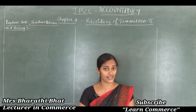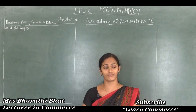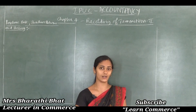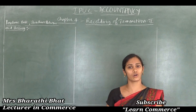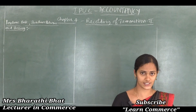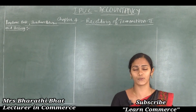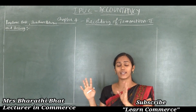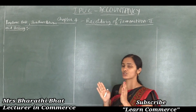Here we will study, by preparing purchase book or sales book or purchase return book and sales return book, how we can transfer the entries to the individual accounts. We know how to pass the journal entries. For example, what is the journal entry for goods purchased from Ratan? Purchases account debited to Ratan's account. If we purchased goods on cash, then purchases account debited to cash account. By applying the rules of debit and credit, we can easily pass the journal entries.